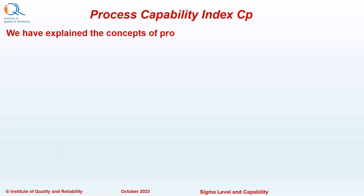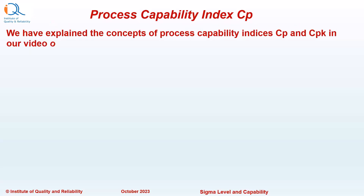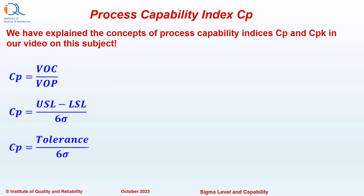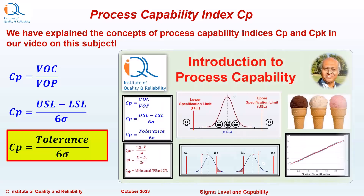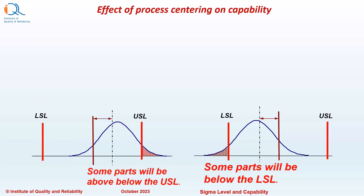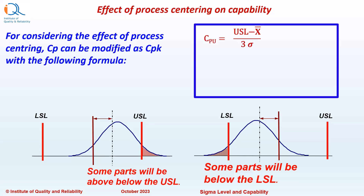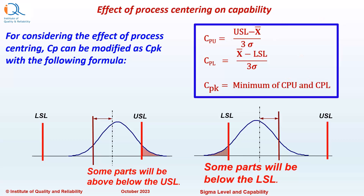We have explained the concepts of Process Capability Indices CP and CPK in our video on this subject. You may remember that CP equals Voice of Customer upon Voice of Process, or simply stated CP equals Tolerance upon 6 Standard Deviation — Tolerance upon 6 Sigma. In the same video, we have also explained the effect of Process Centering on the Capability Index, and CP gets modified to CPK, which is the minimum of CP Upper and CP Lower — CPU and CPL.